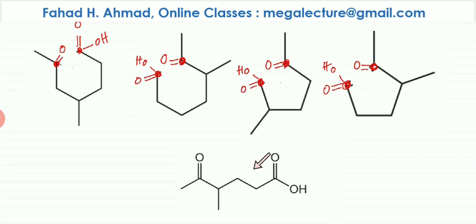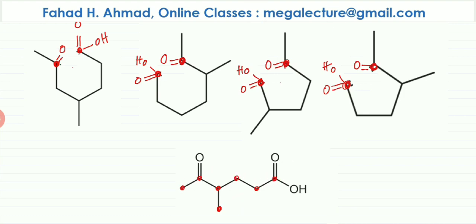The target product molecule has five carbon atoms in a row, with a branch of one carbon atom on the third carbon. Numbering the atoms: C1, C2, C3 (branch here), C4, C5, and on the sixth carbon atom there is a carboxylic acid group. We'll now match each option's oxidation product to this structure.